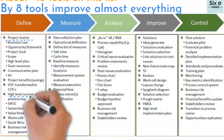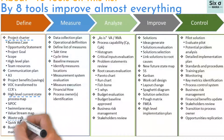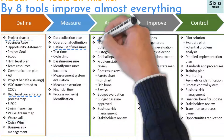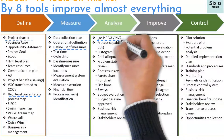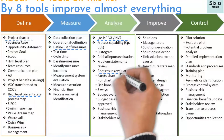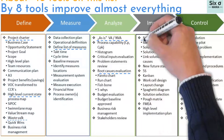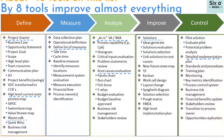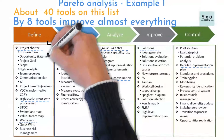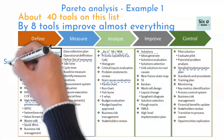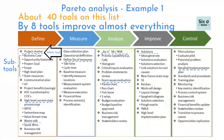Here are those 8 tools: project charter, process mapping, waste walk, list of measures, value added and non-value added research, root cause evaluation, solution implementation, and detailed implementation plan. I call them main tools, and each can contain sub-tools.